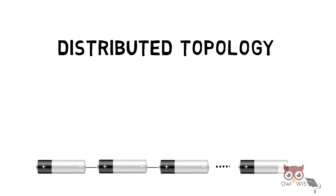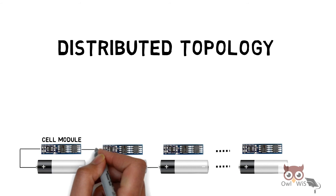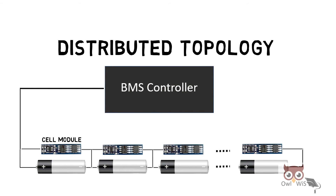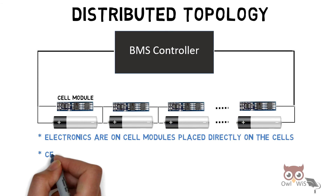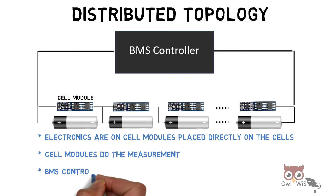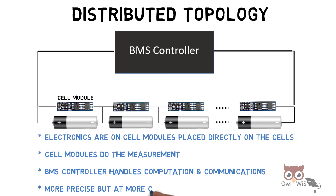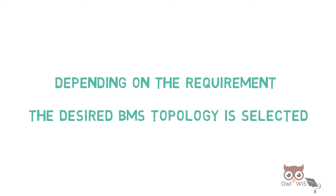Distributed Topology: Here the cells are connected in series. Each cell has a cell module which has the electronics used for measurement. The cell modules are connected across the cell, and then these cell modules are connected to a BMS controller which controls the activity. Electronics are on cell modules placed directly on the cells. Cell modules do the measurement part, and the BMS controller handles computation and communication. More precise but at a higher cost. Depending on the requirement, the desired BMS topology is selected.